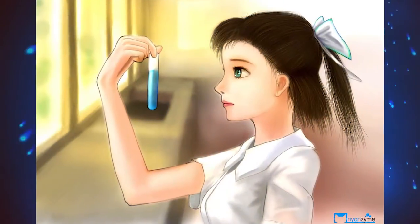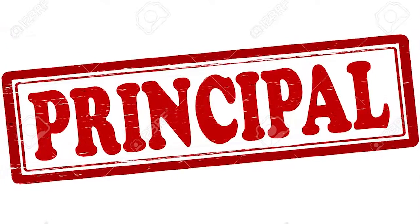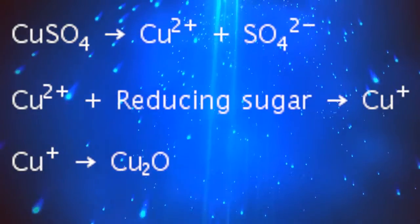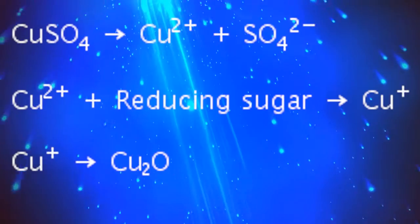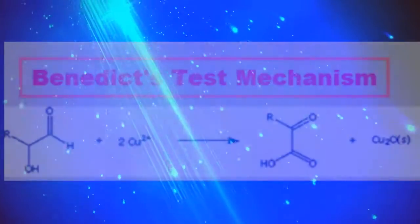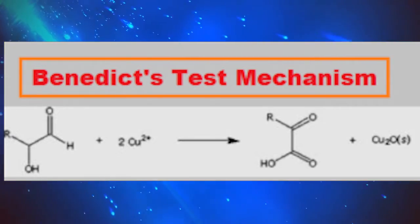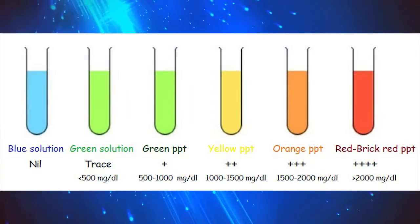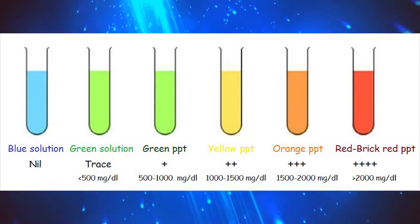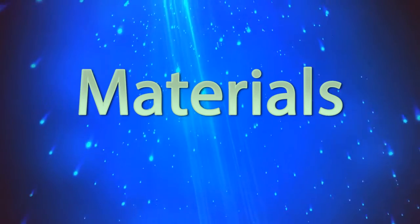Benedict's test is the most commonly used method to analyze urine glucose level. Principle: when alkaline copper sulfate is heated in the presence of glucose or other reducing substances, it is reduced to copper oxide, and the amount of glucose present can be estimated by the formation of a greenish-yellow to red precipitate.